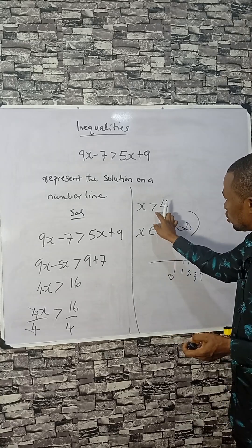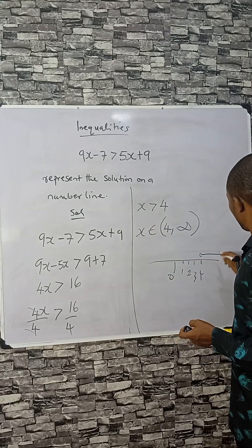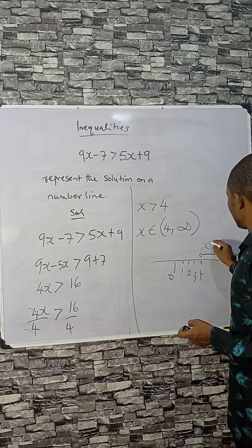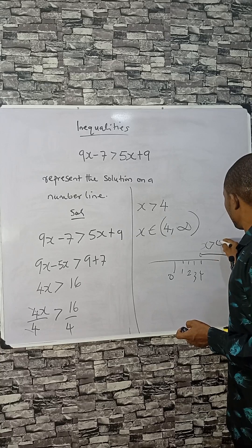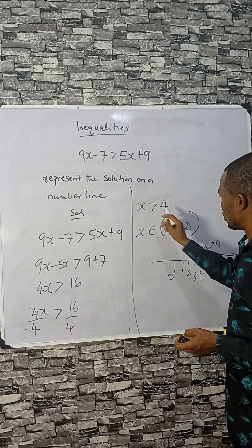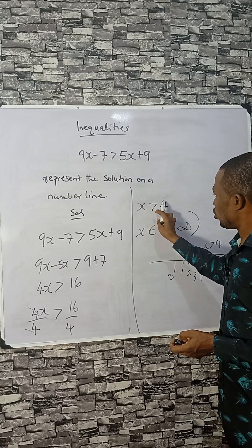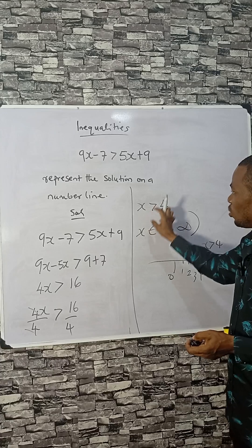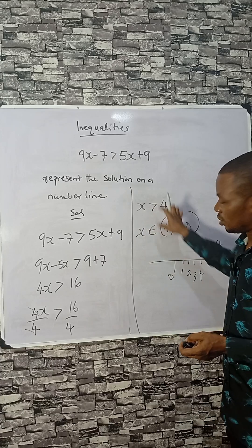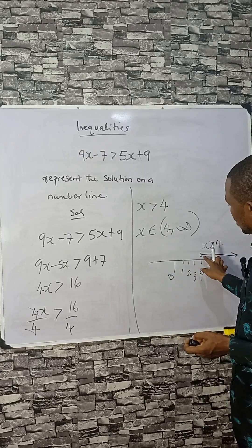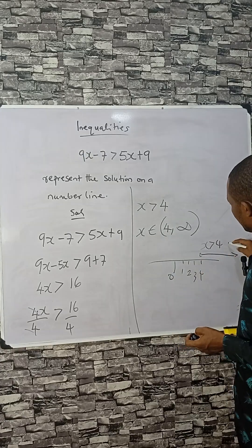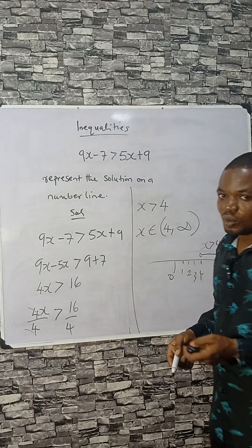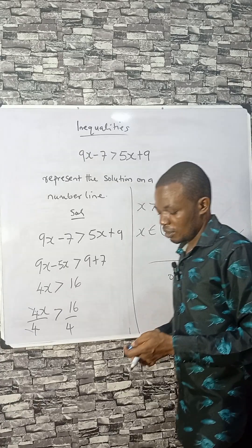You don't need to fill in the dot at 4 because x is strictly greater than 4. If it was greater than or equal to, you would color it in, but since it's just the greater than sign, you leave it open. That's how it's represented. Subscribe for more — bye bye.